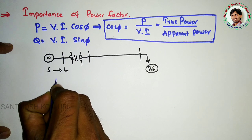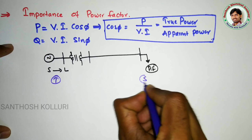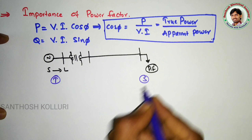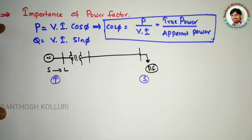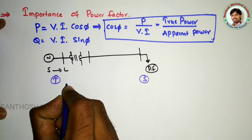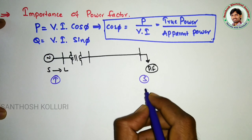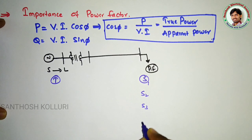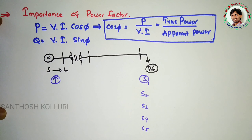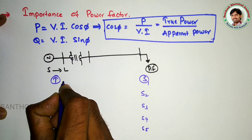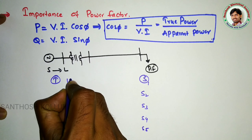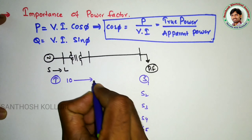To understand the importance of this power factor, let me explain a small example. There is a teacher and there are students. The teacher always gives knowledge to the students. Let us take five students: student number one, two, three, four, and five. This teacher gives an assignment of 10 questions to student number one.